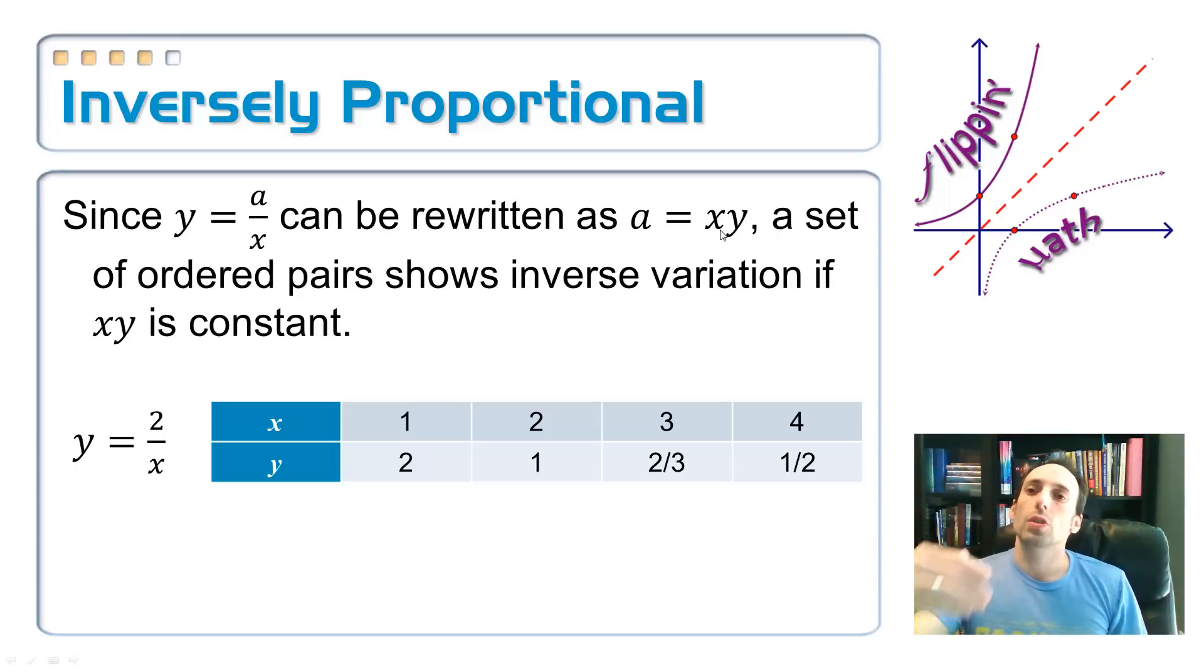This means if I have an equation that shows me inverse variation, to check it, all I have to do is look at the numbers and times them together. And see if they multiply up to the same number. So, if I multiply, look at the equation there, y is equal to 2 over x. If I multiply that x over, the constant of variation is 2.